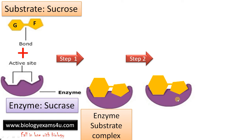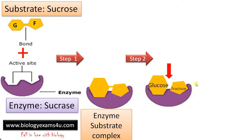Step two: binding to the active site of the enzyme triggers either the formation of some bonds or the breakage of some bonds, resulting in the formation of product. Here, sucrose is a disaccharide, and the glycosidic bond between glucose and fructose is broken down in the presence of this enzyme.